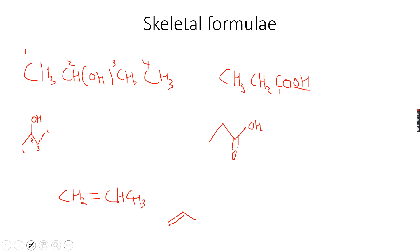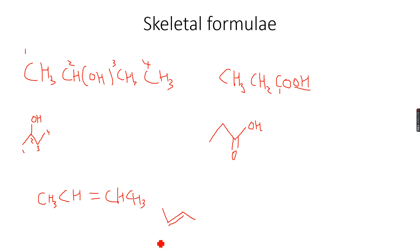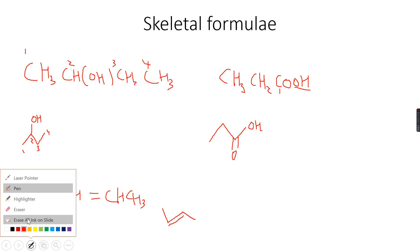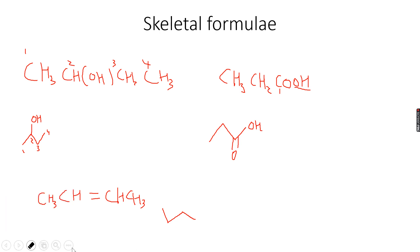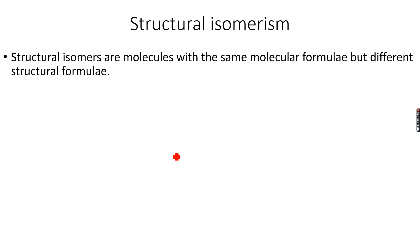Let's say we have CH3 on both sides, so we would have CH3, CH double bonded to CH, and then CH3 again. As always, we make the double bond inside the structure. That's how we make skeletal formulas.